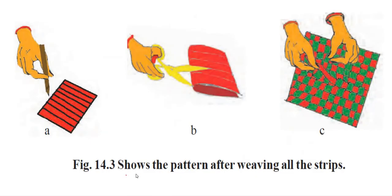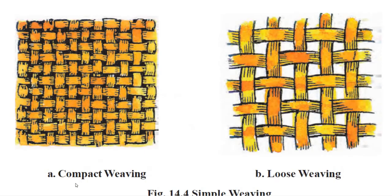Here you can see the pattern after weaving. This is an example of compact weaving, and this is an example of simple weaving. In loose weaving, there are visible gaps between the threads, while compact weaving has no gaps at all.